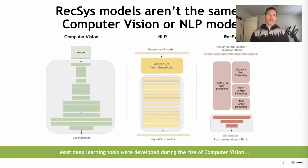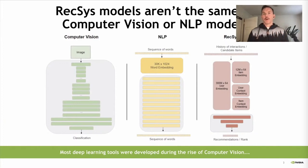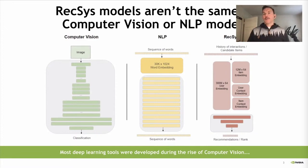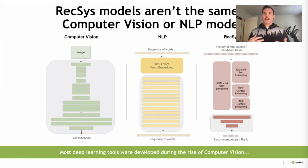Those embeddings are direct memory lookups, but they don't make up the majority of the model. When you think about the overall scope of transformer models — especially the more recent ones at billions of parameters — the vast majority of the representation on the compute device is in the compute aspect, not the memory aspect.